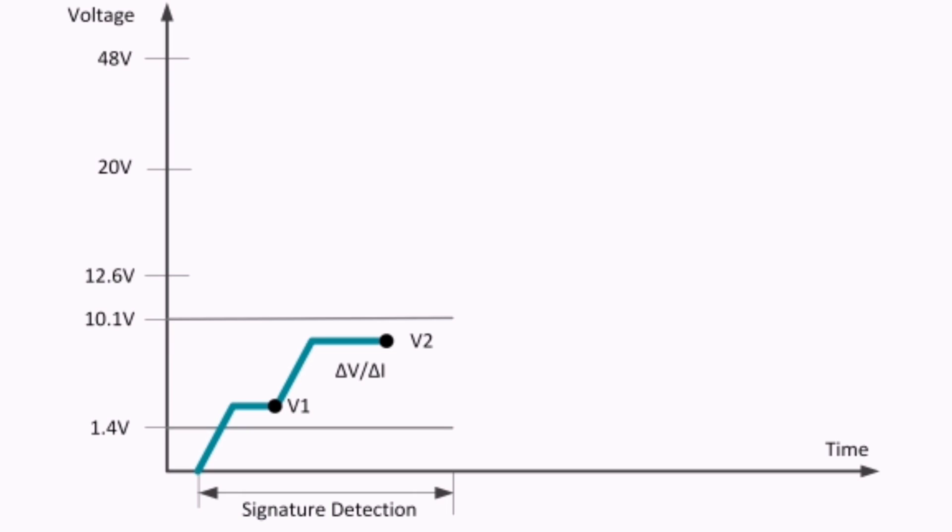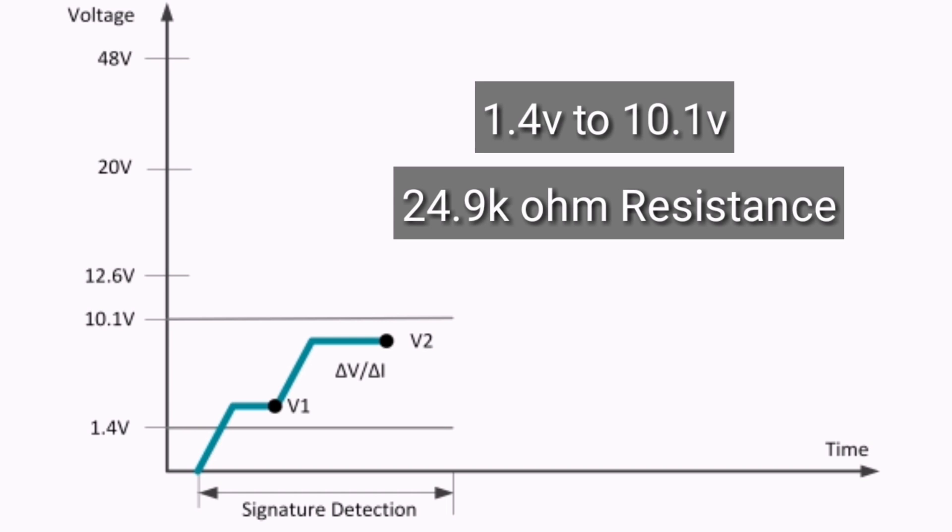The first step in the process is signature detection. Signature detection uses a low voltage of 1.4 volts to 10.1 volts to detect a characteristic signature of IEEE-compatible powered devices using a 24.9 kiloohm resistance.